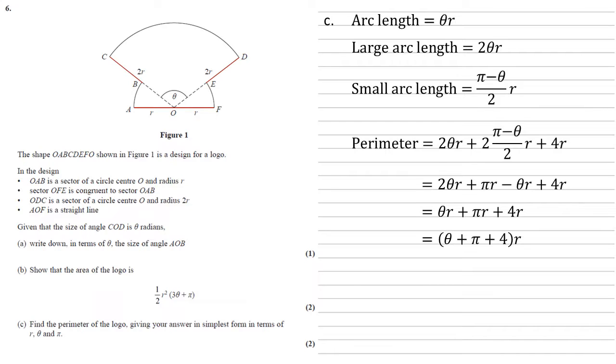So let's factorize out the R. So we get θ plus π plus four all times by R. And that's our perimeter.